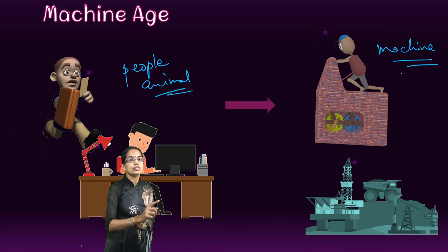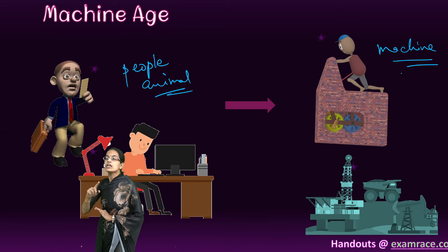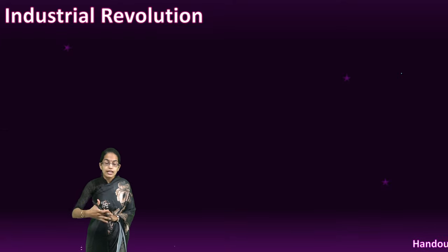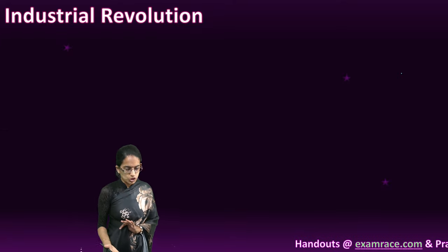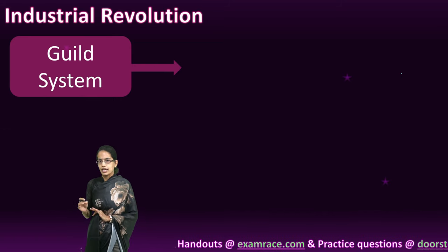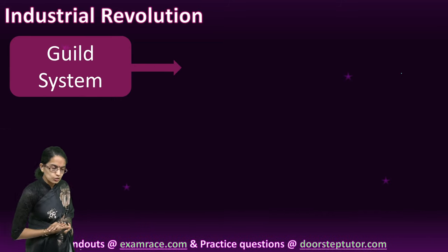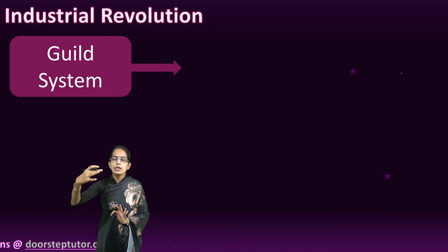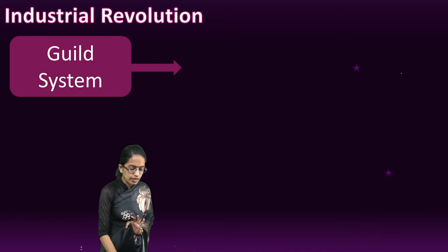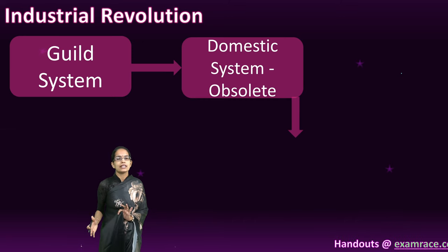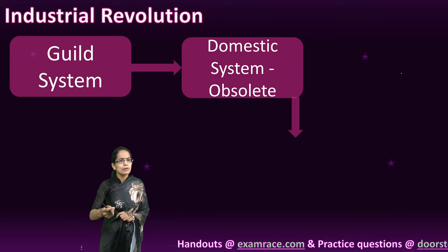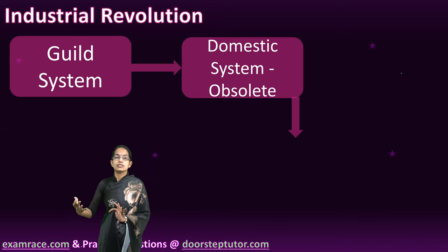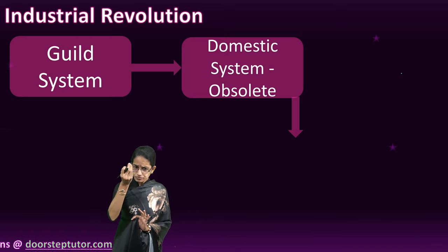Since one machine could replace many people or animals, there was a significant change in how life evolved. Initially we saw guild systems — where people with common interests stayed together — which was replaced by the domestic system. The domestic system implied use of simple machines in the household for production. The Swadeshi system of the Charkha is an example of the domestic system. But this system became obsolete.